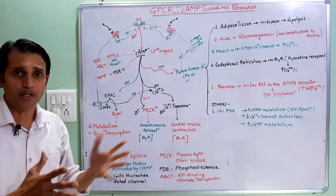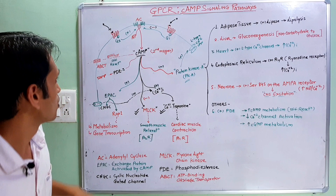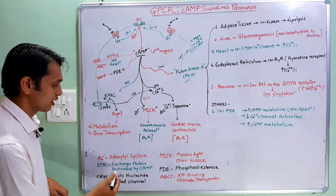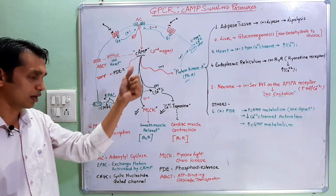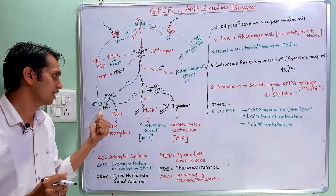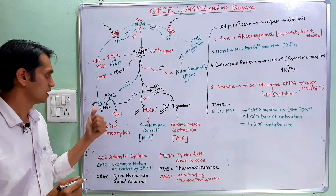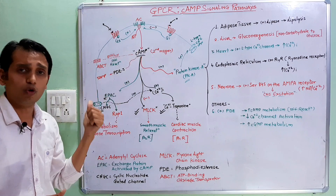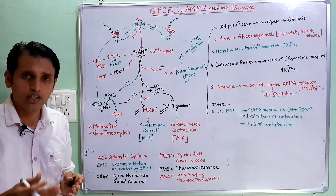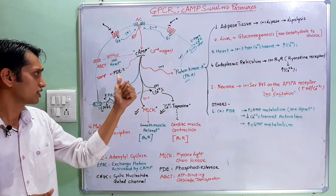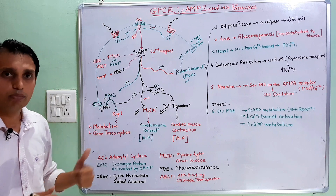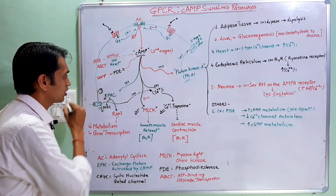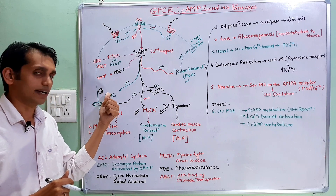The main effect of cyclic AMP — first is EPAC, which stands for Exchange Protein Activated by Cyclic AMP. Cyclic AMP activates some proteins like Rap1 and CNGC. CNGC means cyclic nucleotide-gated channels, like calcium ion channels. Cyclic AMP activates these calcium ion channels, causing accumulation of calcium ions intracellularly. Rap1 protein is mainly responsible for metabolism and gene transcription in the cell.